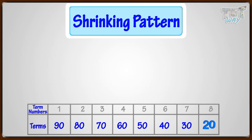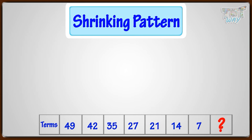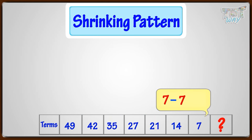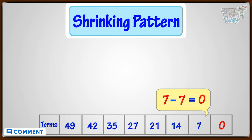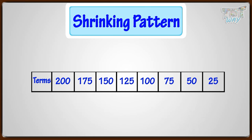Let's have a look at more shrinking patterns. Here we have a shrinking pattern — what should be the next term? The next term would be 7 minus 7, that is 0. Here we have another shrinking pattern where each term decreases with the growing term number. So these are shrinking patterns.